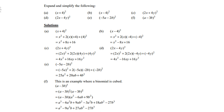Example f is a binomial cubed: (a − 3b)³. Split it into (a − 3b)¹ times (a − 3b)². The first binomial stays as is; square the second to get a² − 6ab + 9b². Then FOIL: multiply a into the bracket, multiply −3b into the bracket, collect like terms, and the answer is a³ − 9a²b + 27ab² − 27b³.